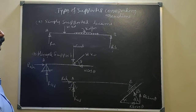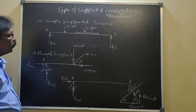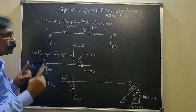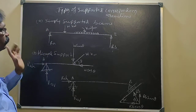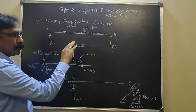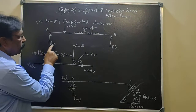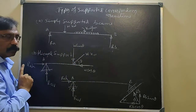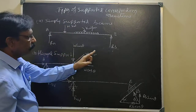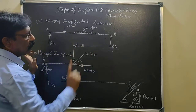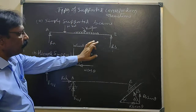Types of supports and corresponding reactions at the supports. For example, AB is the beam and at A and B it is simply supported. There is no fixity, so therefore it is called a simply supported beam. The loads may be point load, uniformly distributed load, uniformly varying load, or any combined type. RA and RB are the reactions at the corresponding supports. Since the loads act in the vertically downward direction, the reactions will be vertically upward.